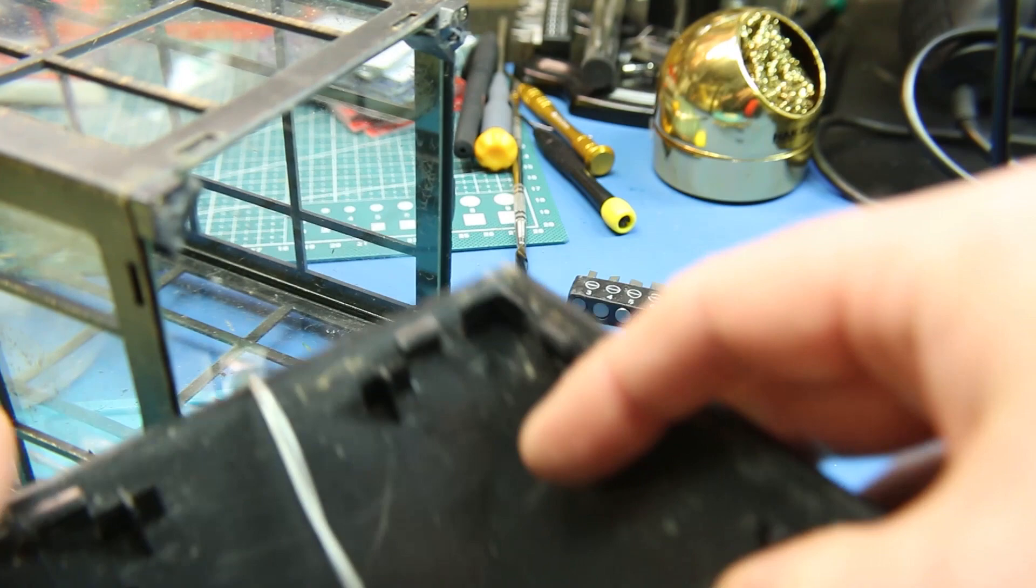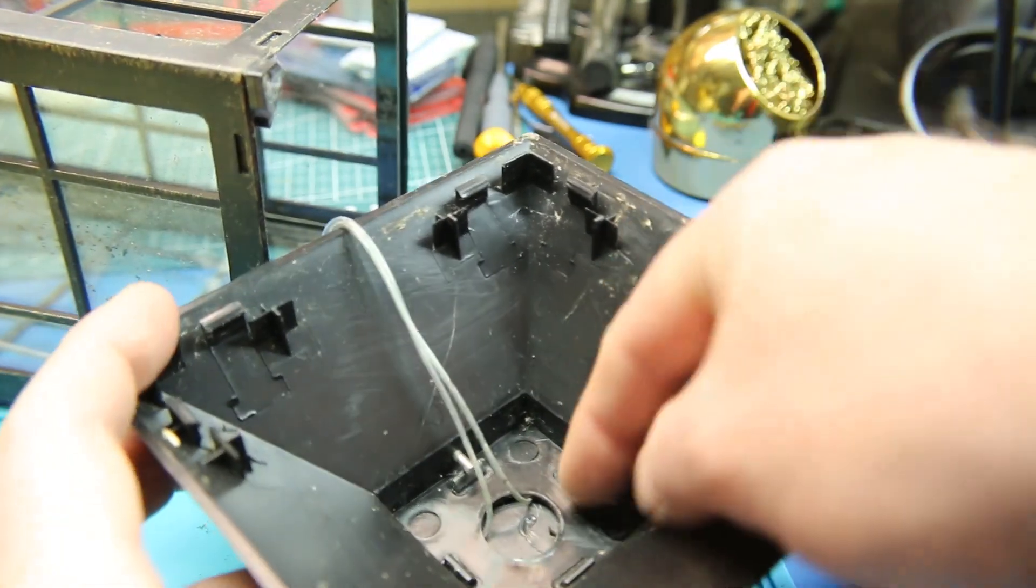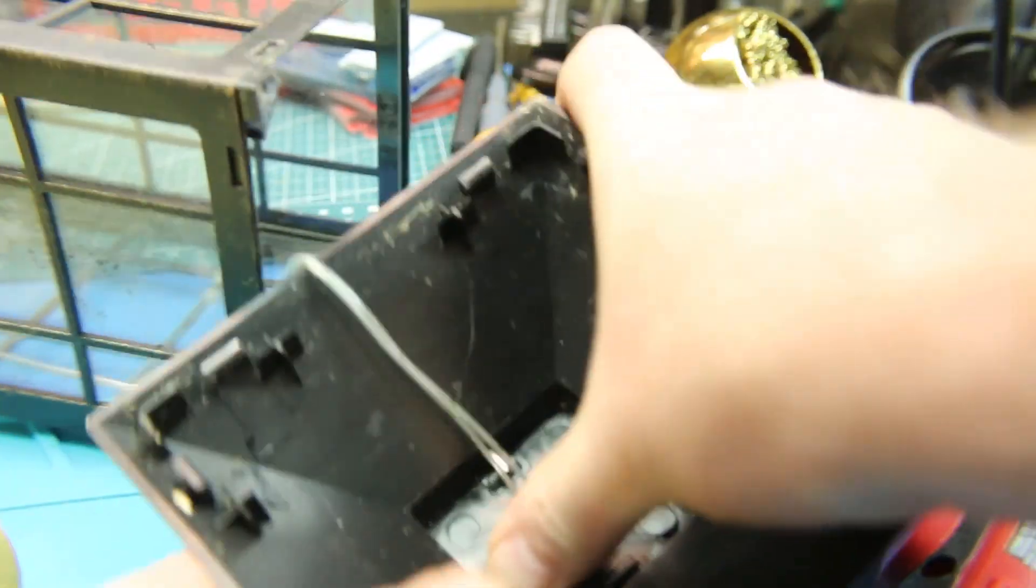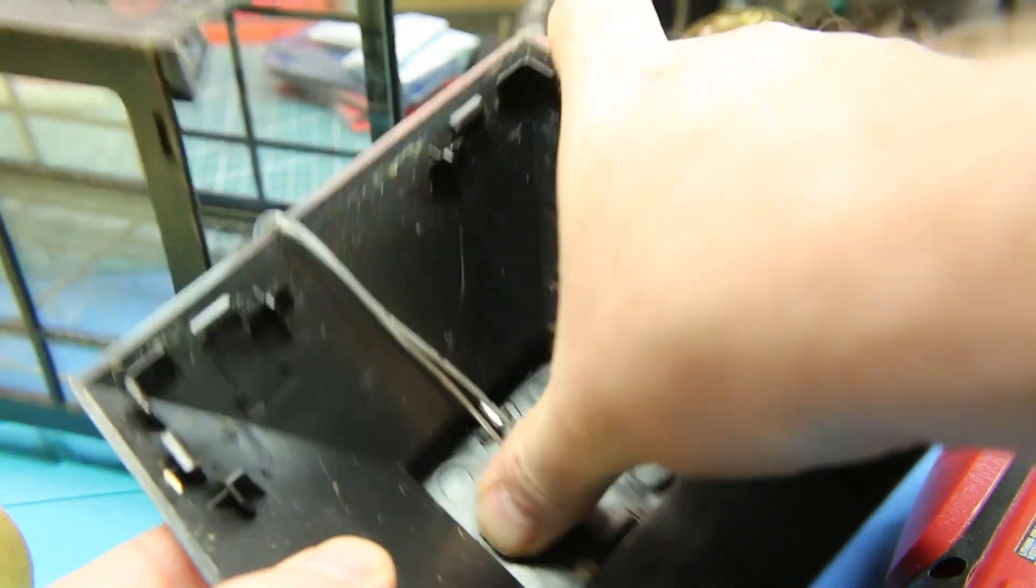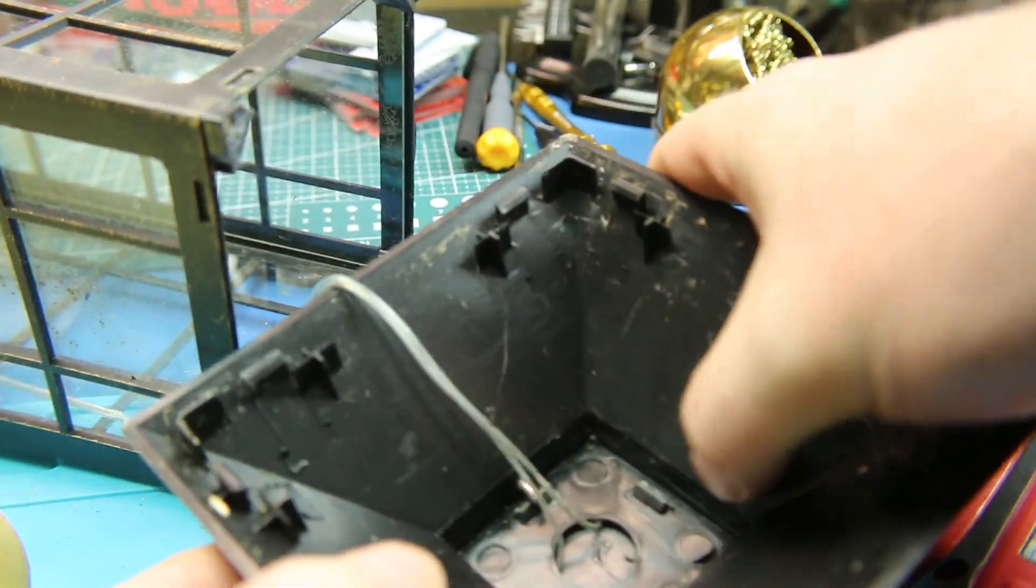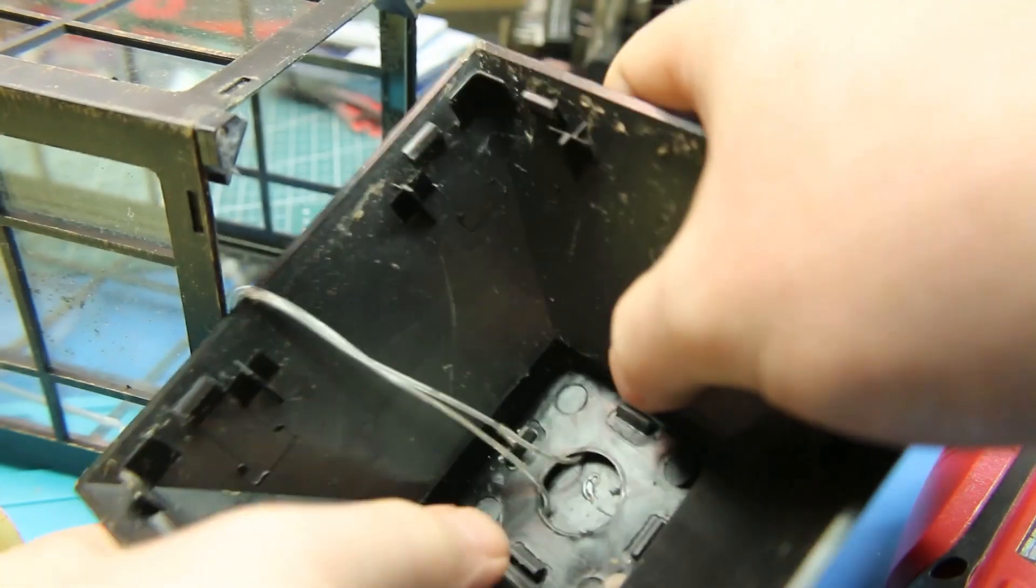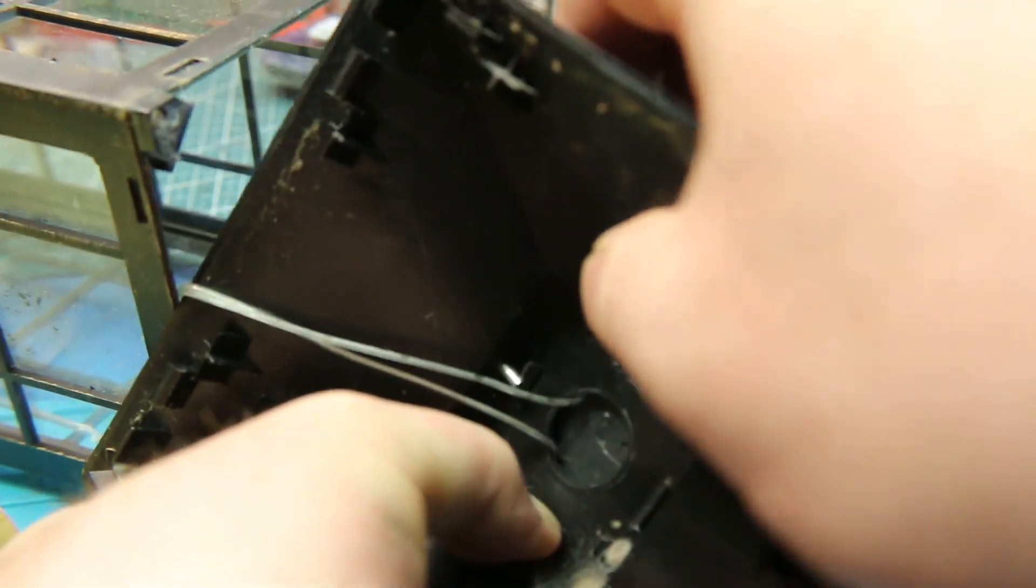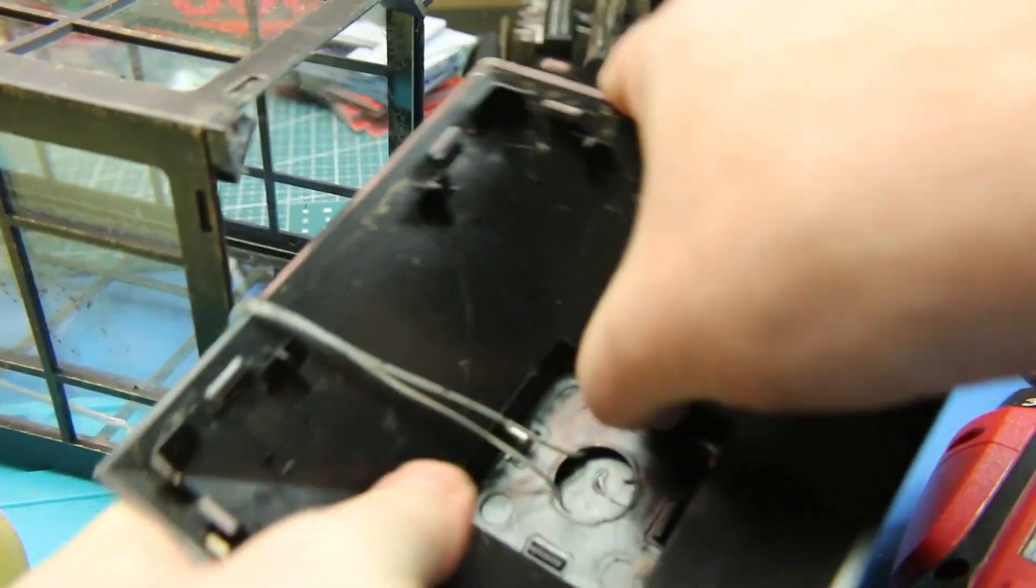Now that we know the issue lies with the panel in the top we can go ahead and figure out how to get in there. In this case it looks like it's clipped together but it also looks like we have some glue on there. Now the glue that's used in most factories is just the same as the hot glue that we use at home. So we can get in here even if it's sealed up.